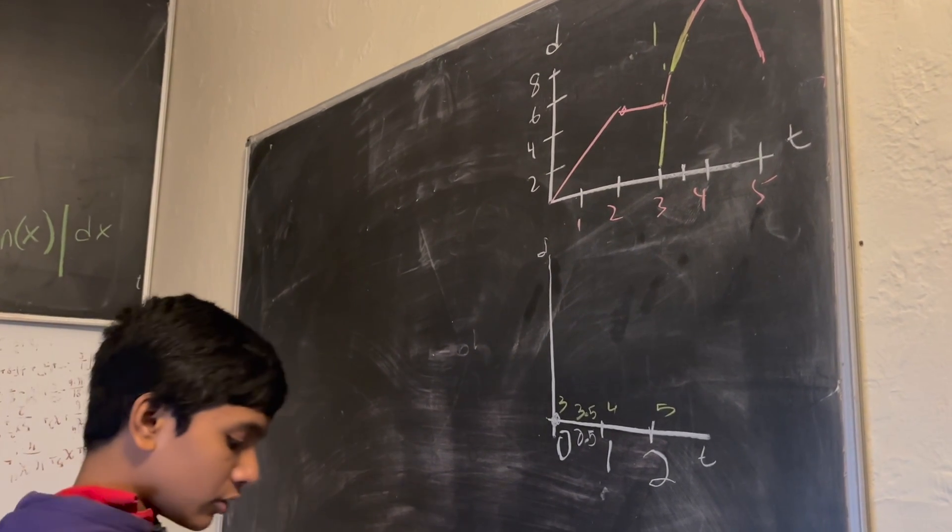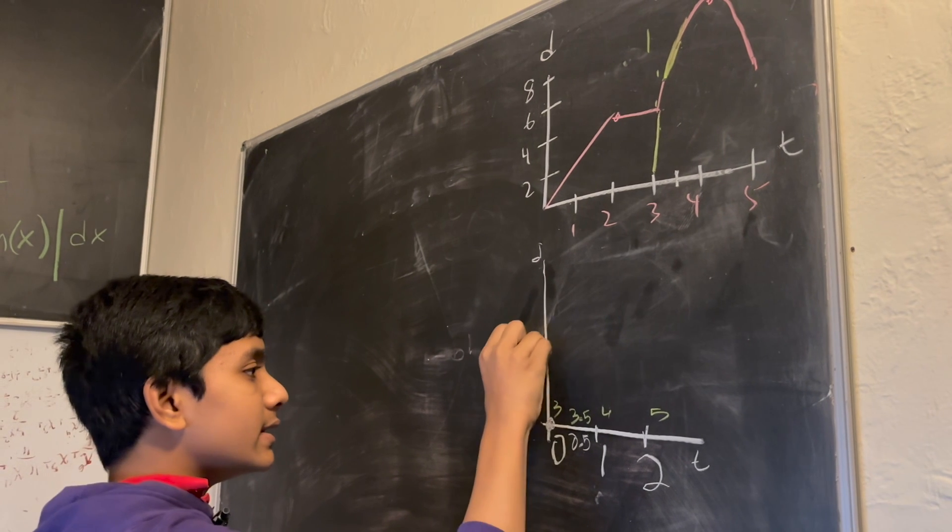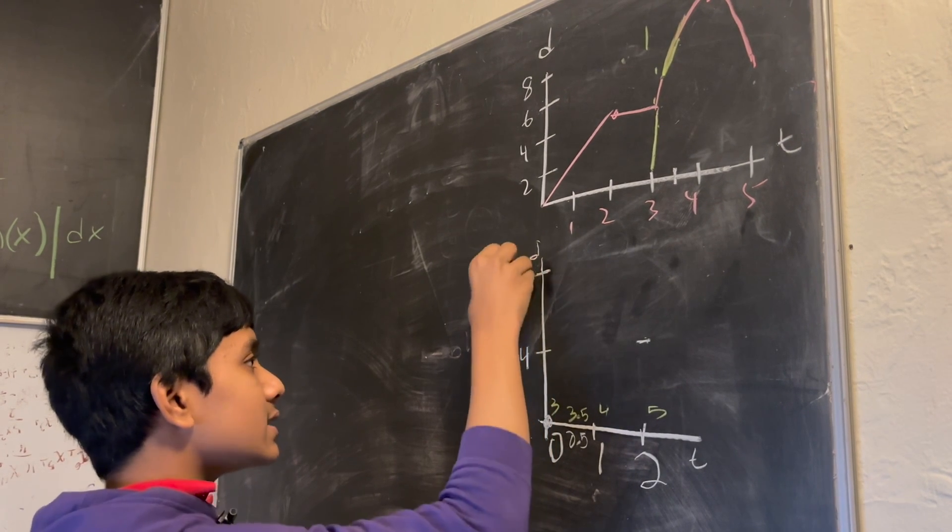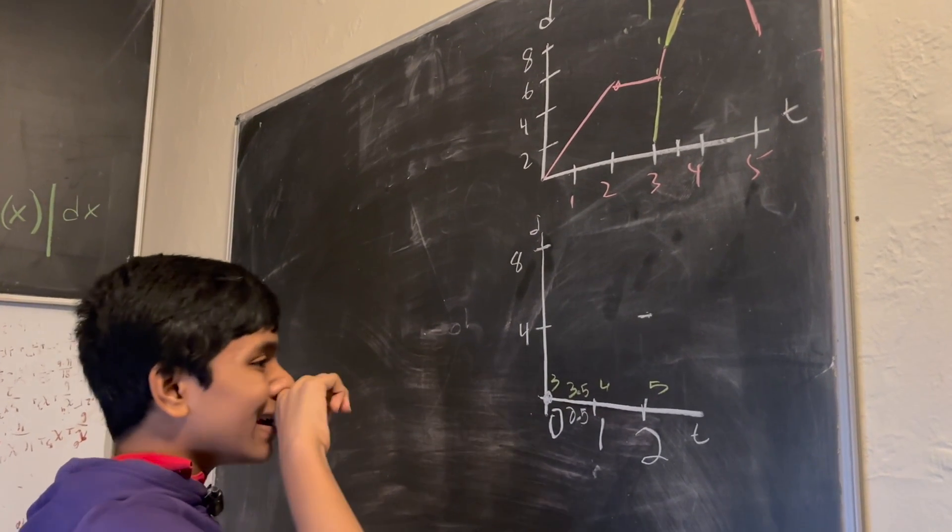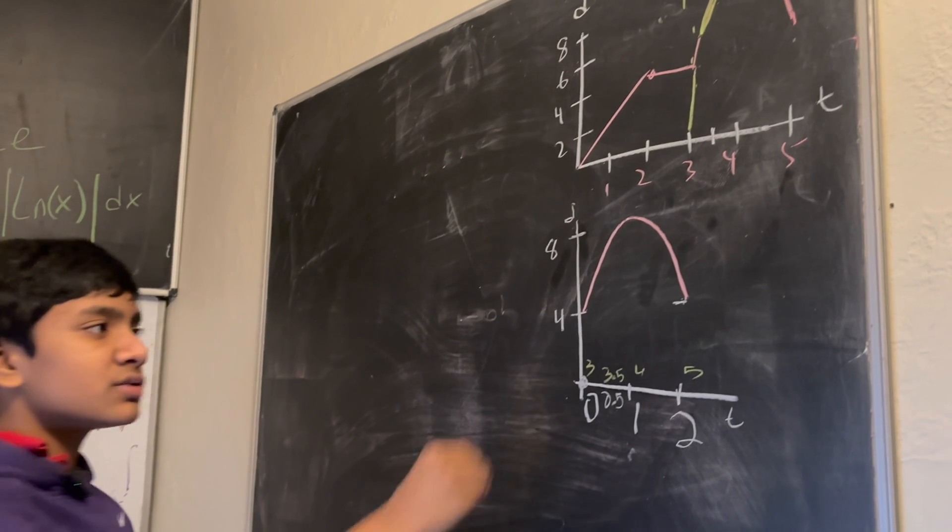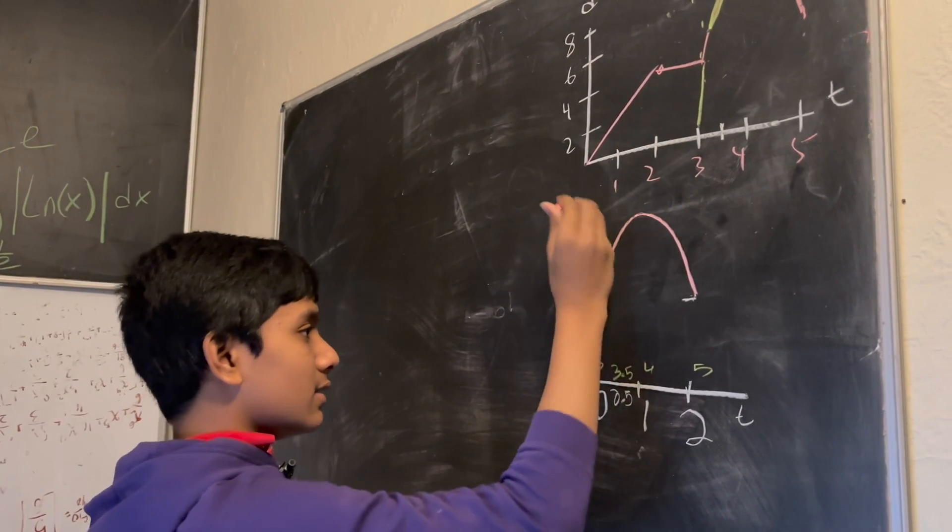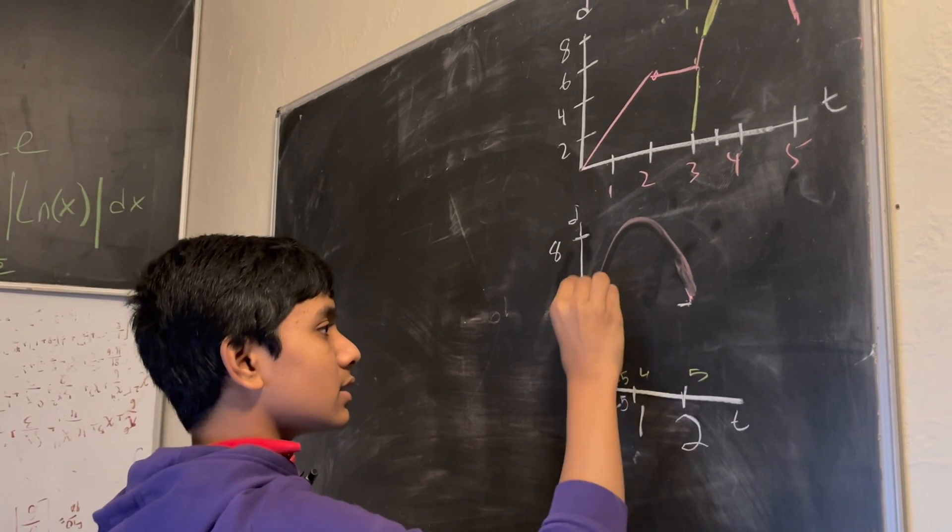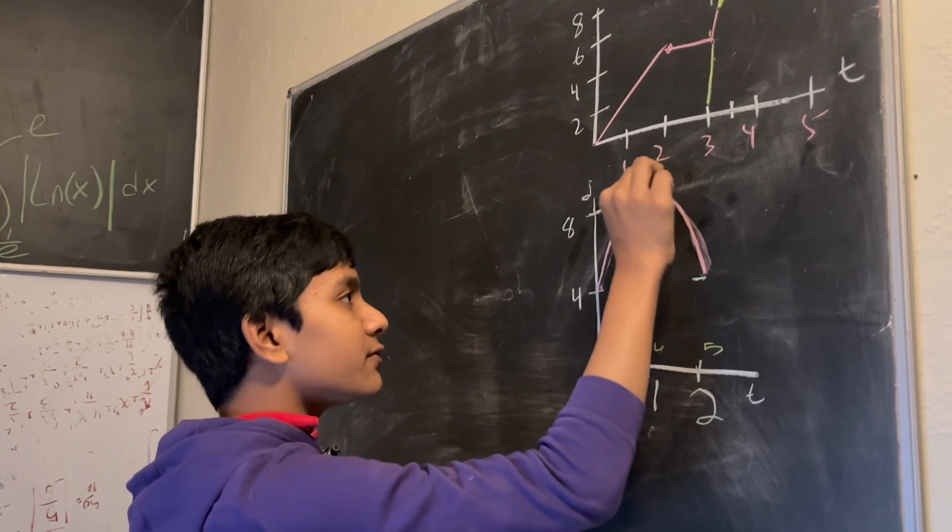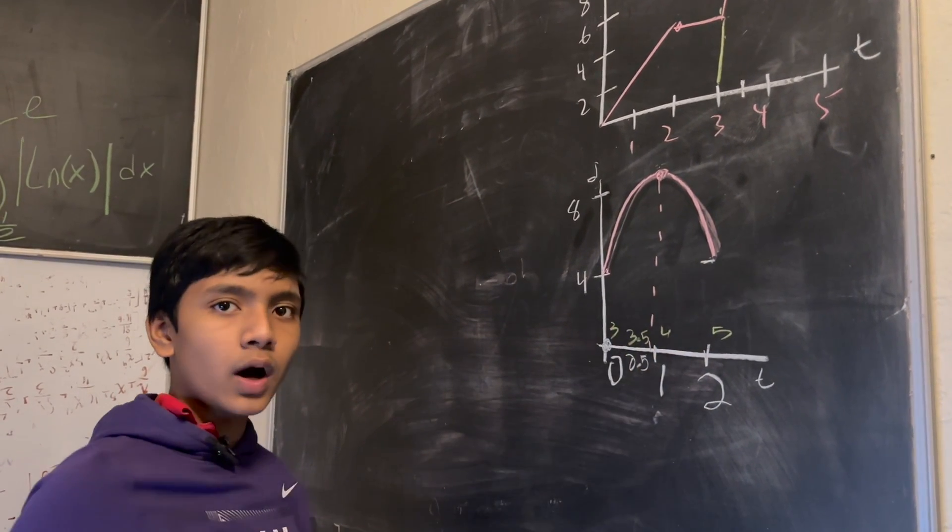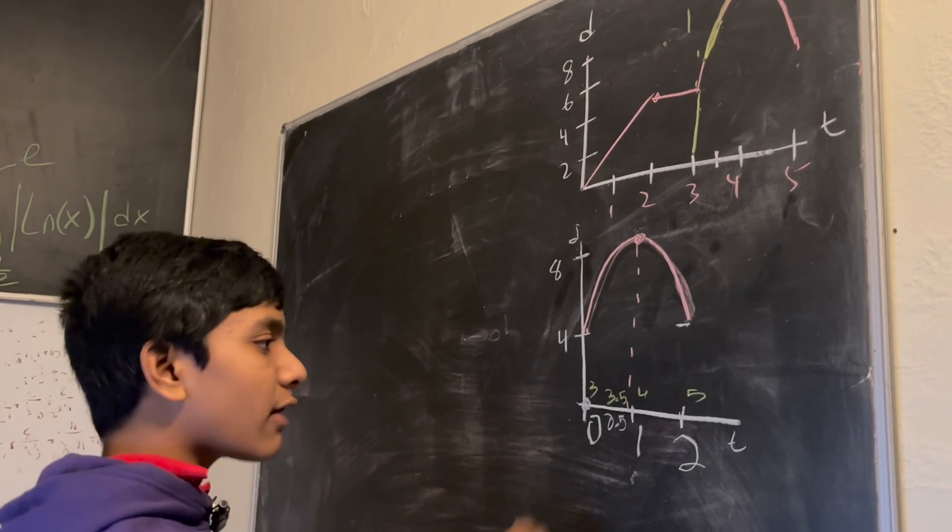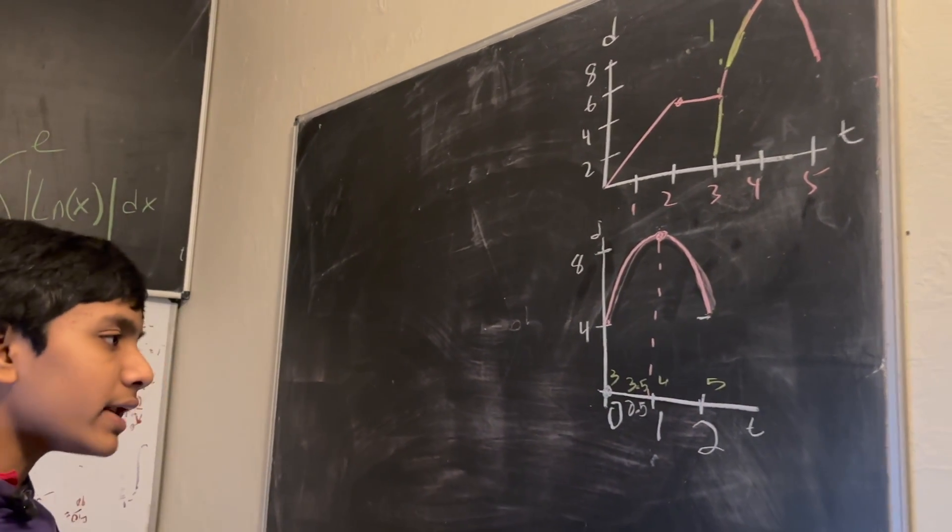Now, this used to be three, but I am writing it as zero. This used to be four, but now I am writing it as one. This used to be five, but now I am writing it as two. In the same way, the point we are trying to figure out the velocity at used to be three and a half, but now I am writing it as 0.5. So now, all we have to consider is the graph itself.